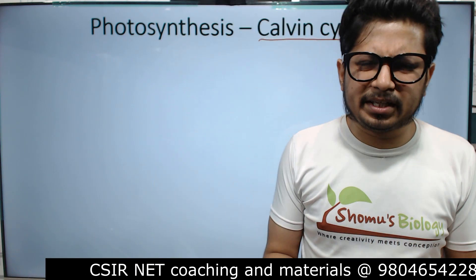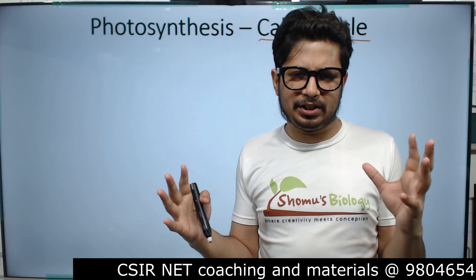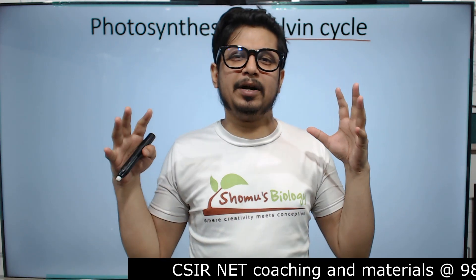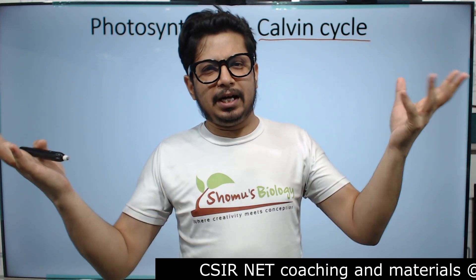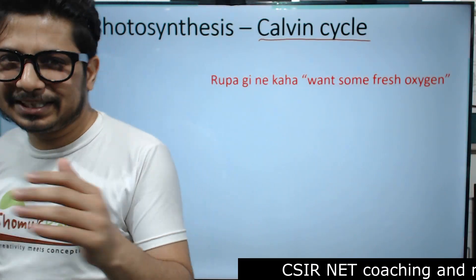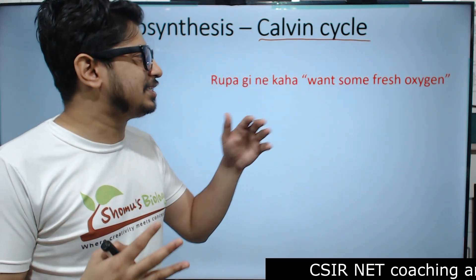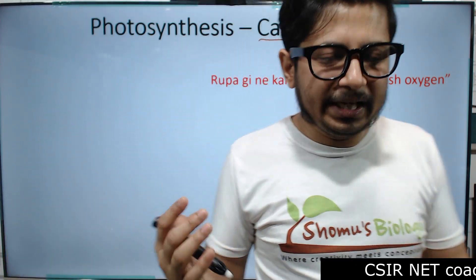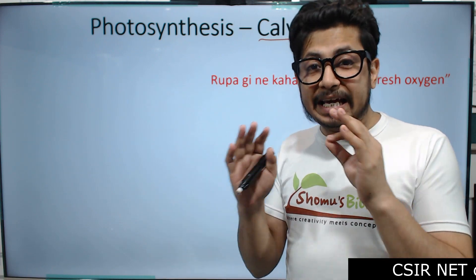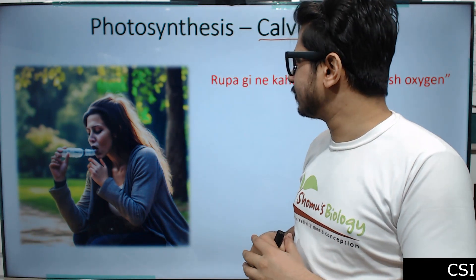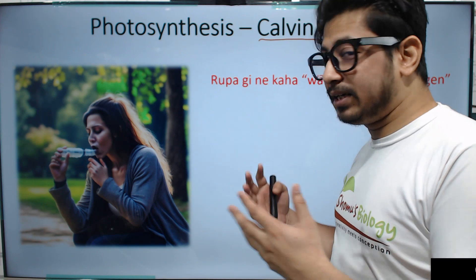For the Calvin cycle, the mnemonic is simple. We have a class teacher named Rupa ji, and she always wanted fresh oxygen when she came to class — she'd say 'open the doors and windows so we can get some fresh oxygen.' So the mnemonic is: 'Rupa ji ne kaha, want some fresh oxygen.' If you remember this, you will never forget the steps of the Calvin cycle.